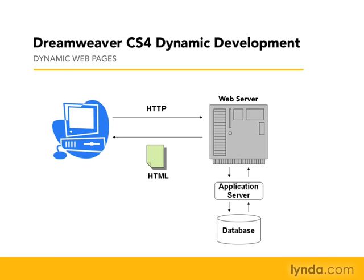The application server receives and interprets the request, and it executes a script, which might have references to a database or other server-side resources. After doing its work, it then generates a response in the form of HTML. This generated HTML is then sent back to the browser over the HTTP connection. From the browser's point of view, it's receiving HTML that looks exactly the same as in a static environment — it has no sense that there's a dynamic server on the back end. So as long as the application server generates well-formed HTML that can be interpreted by the browser, the application works as expected.